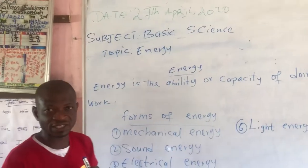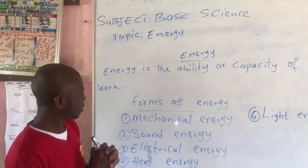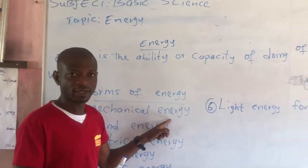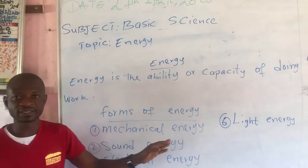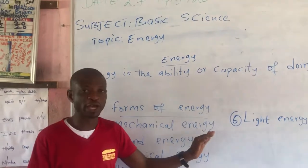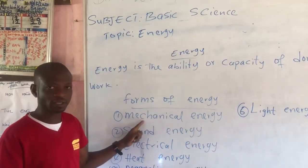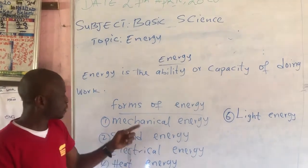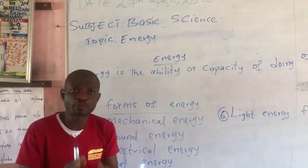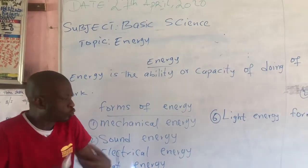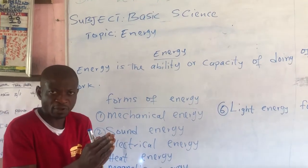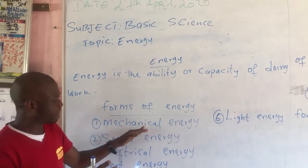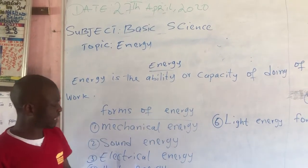Forms of energy — number one: mechanical energy. Mechanical energy is energy possessed by a body due to its position, shape, and movement. Mechanical energy is divided into two: potential and kinetic.